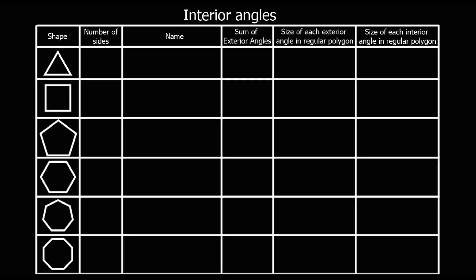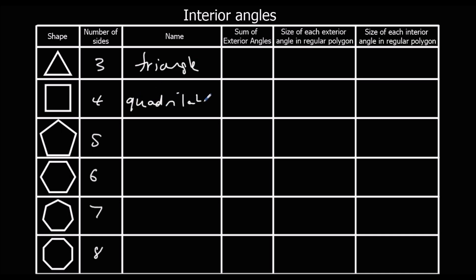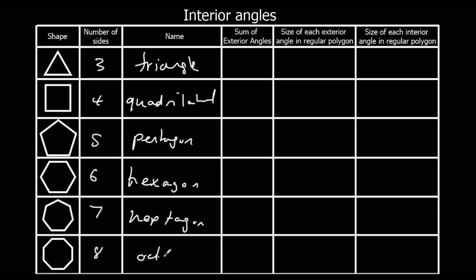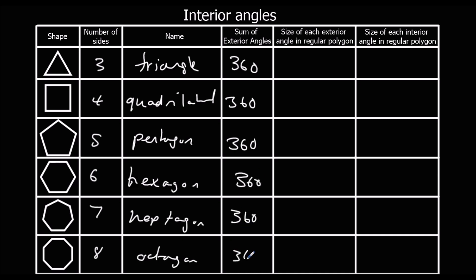Here's another table to fill out with all the same shapes we had before: triangle, quadrilateral, pentagon, hexagon, heptagon, octagon. The sum of the exterior angles is always 360 degrees, no matter what shape it is. The size of each exterior angle: 360 divided by 3 is 120; divide by 4 is 90; divide by 5 is 72; divide by 6 is 60.